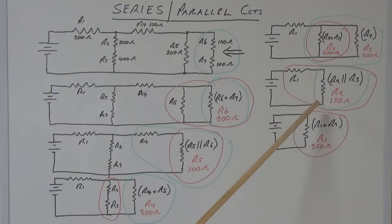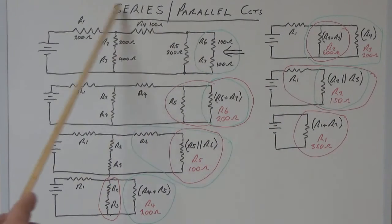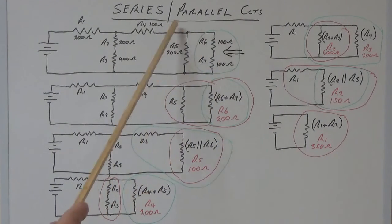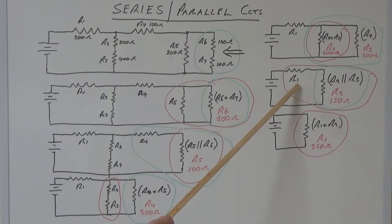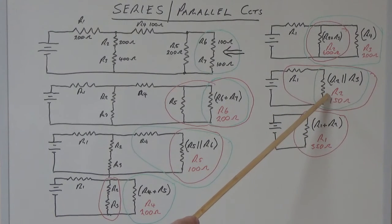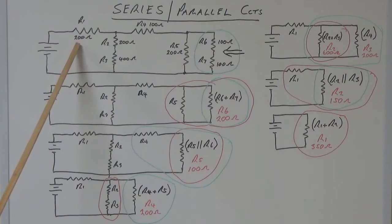Now we can complete the final part, which will give us our total resistance for this whole circuit here. We've got R1 and the new R2 in series with each other, so now you have 200 ohms in series with 150 ohms. We get a total value of 350 ohms, and that's the resistance of this complete circuit here.